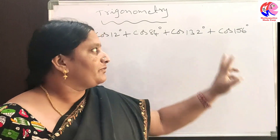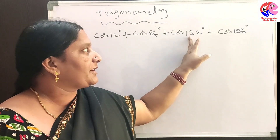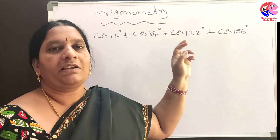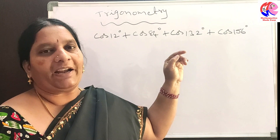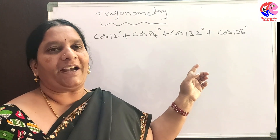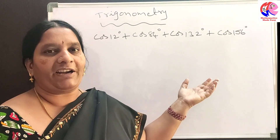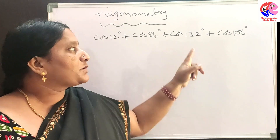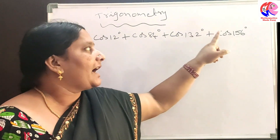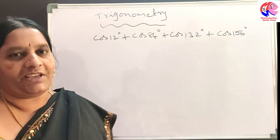We are finding the supplementary angles of 132 degrees and 156 degrees. What are supplementary angles? A pair of angles are said to be supplementary if their sum is equal to 180 degrees. So we are finding the supplementary angle of 132 degrees and the supplementary angle of 156 degrees.